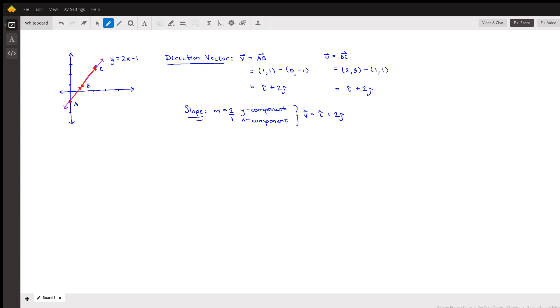Then you could use slope, right? Slope is rise over run, so y component over x component. It should agree with finding the direction vector using two points.